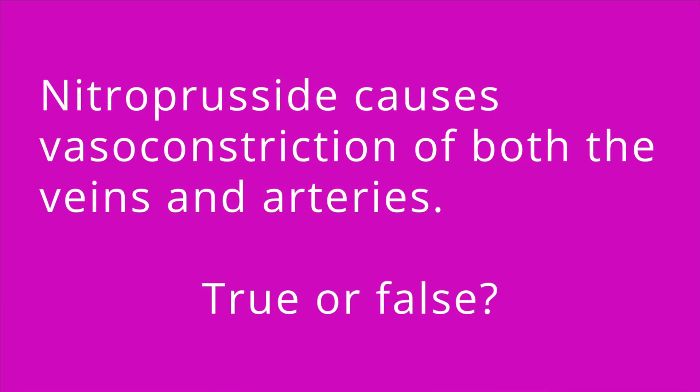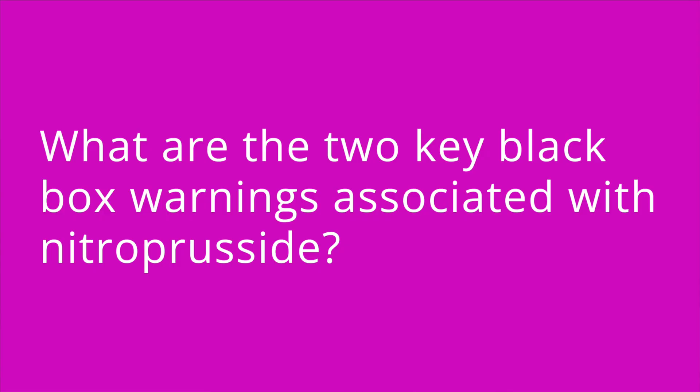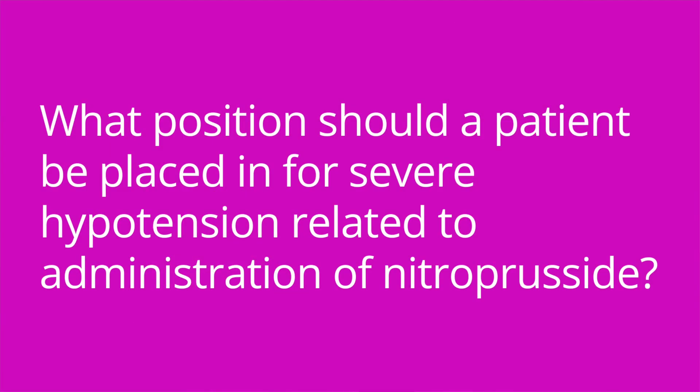It's quiz time and I have three questions for you. Question number one: nitroprusside causes vasoconstriction of both the veins and arteries — true or false? The answer is false; it causes vasodilation of both the veins and arteries. Question number two: what are the two key black box warnings associated with nitroprusside? The answer is hypotension and cyanide toxicity. Question number three: what position should a patient be placed in for severe hypotension related to administration of nitroprusside? The answer is Trendelenburg position, where the patient's head is lower than their feet.